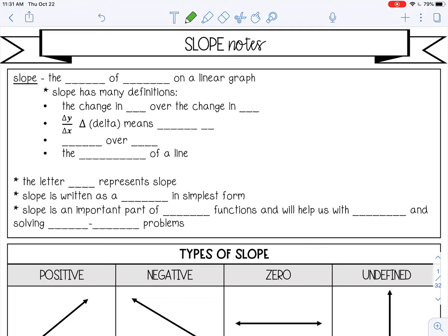Welcome to this lesson on slope. Slope is the rate of change on a linear graph, and you can find rate of change on more than just a linear graph, but in these lessons we're going to focus on linear graphs or lines.